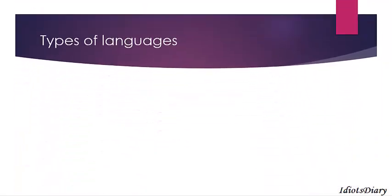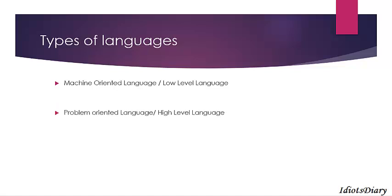Next, we will discuss about some types of languages in computers. There are two types: first is machine-oriented language or low-level language, and second is problem-oriented language or high-level language. Machine-oriented language is further classified into two categories: binary language and assembly language.